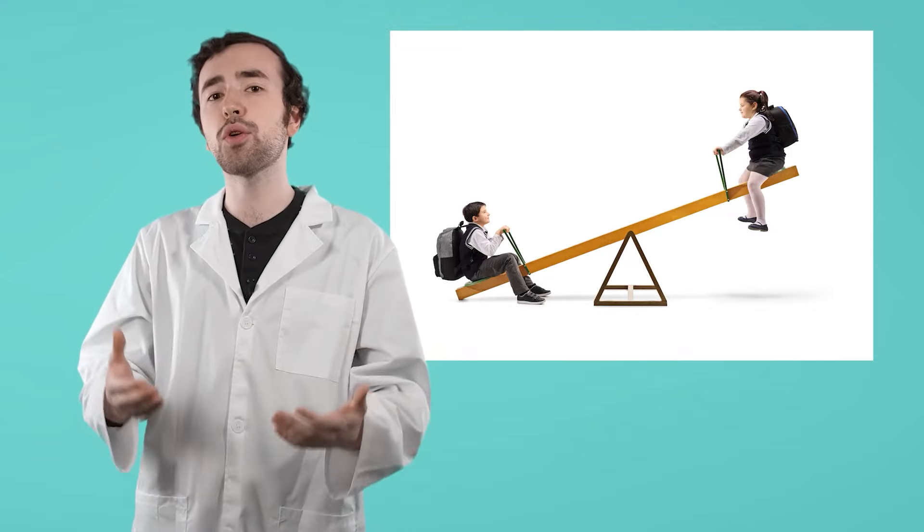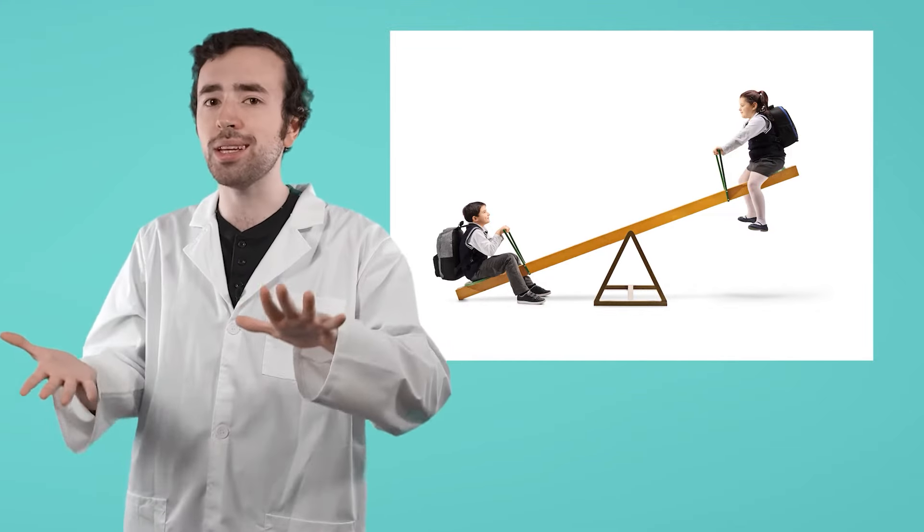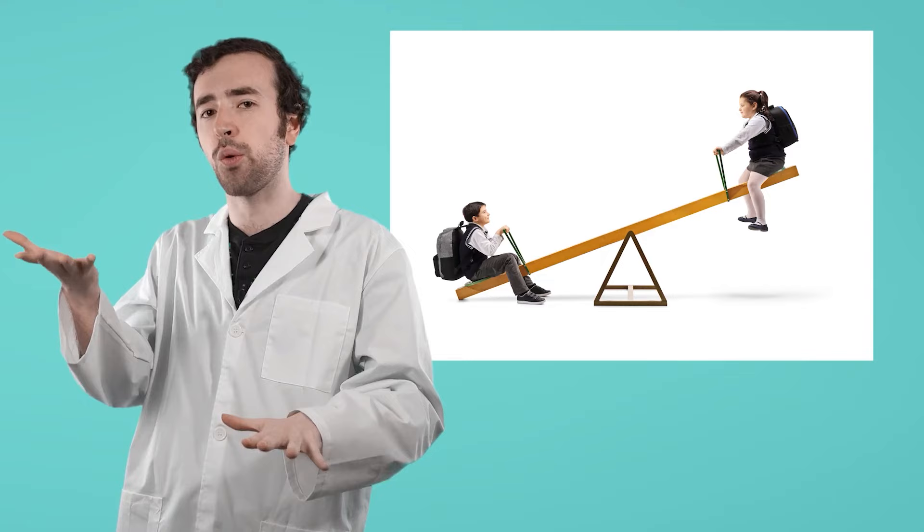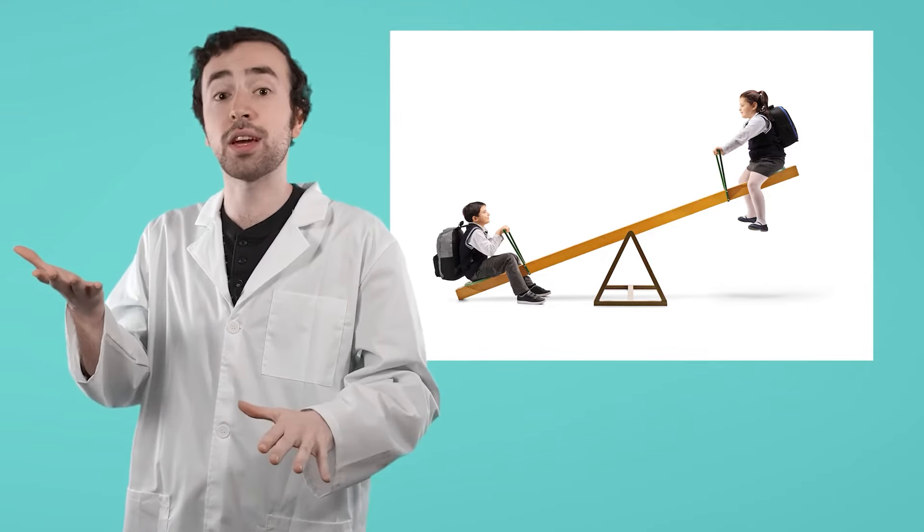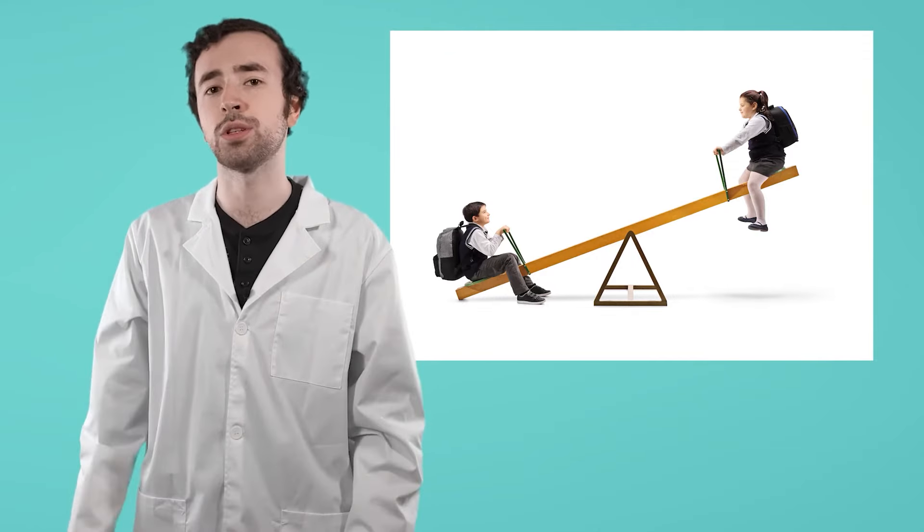But with a seesaw, you could get that same result, your friend being lifted into the air, just by sitting down on the other end. The lever allows us to change the direction in which the force is applied, giving us our desired outcome much easier. Your friend still gets sent in the air, and you put in a lot less effort to do it.